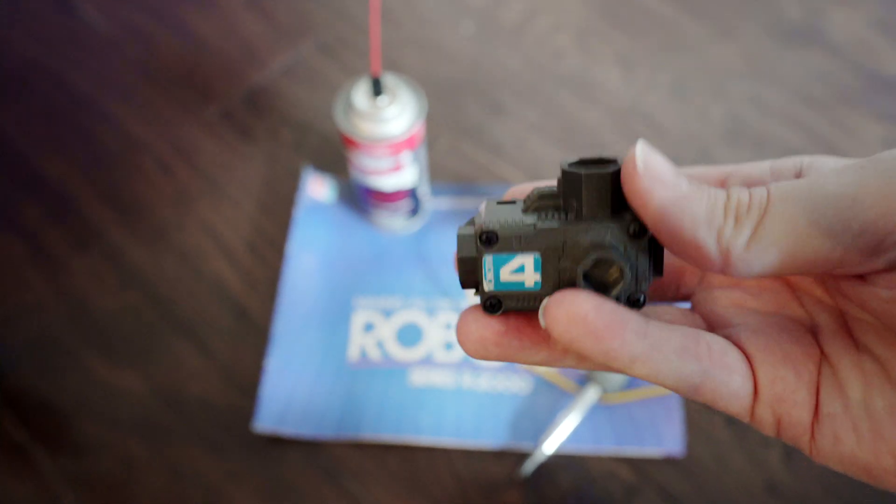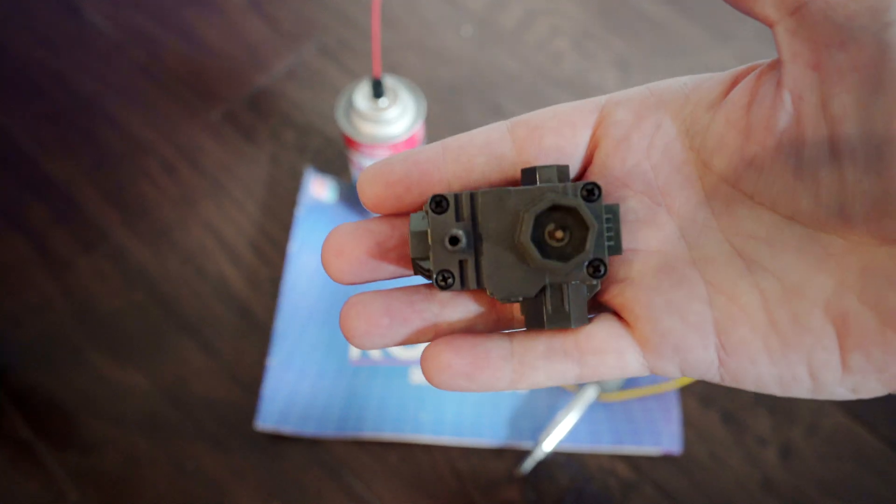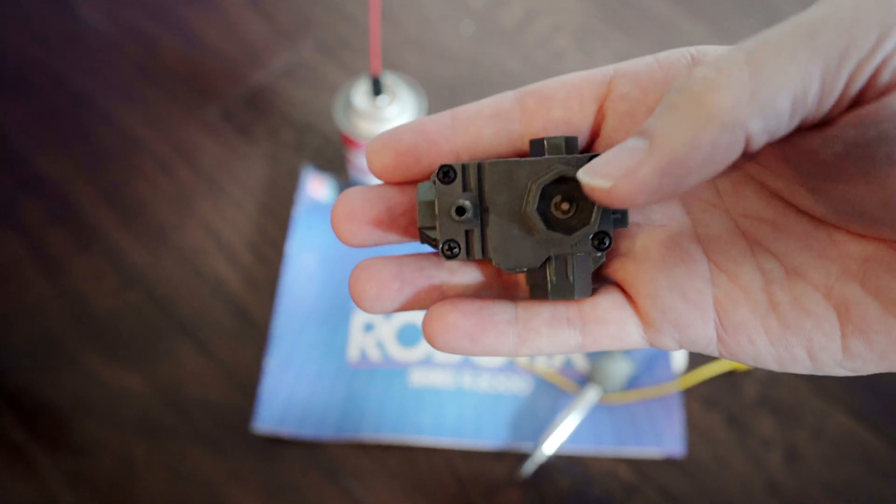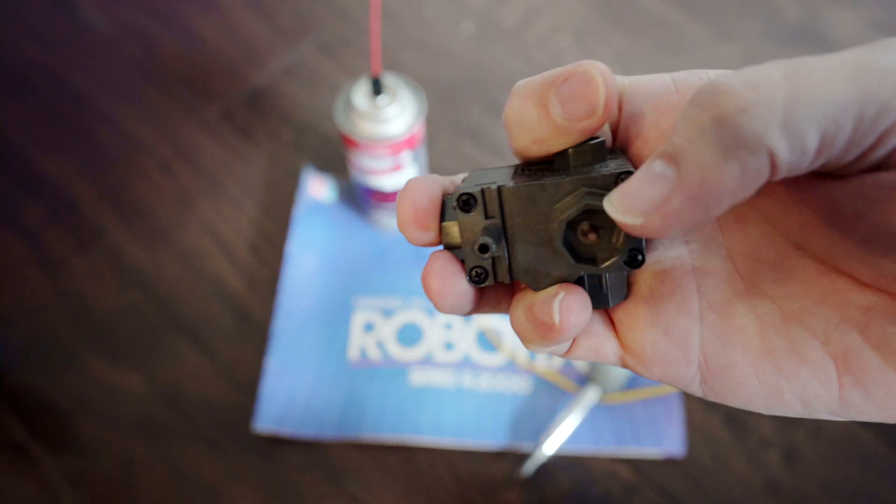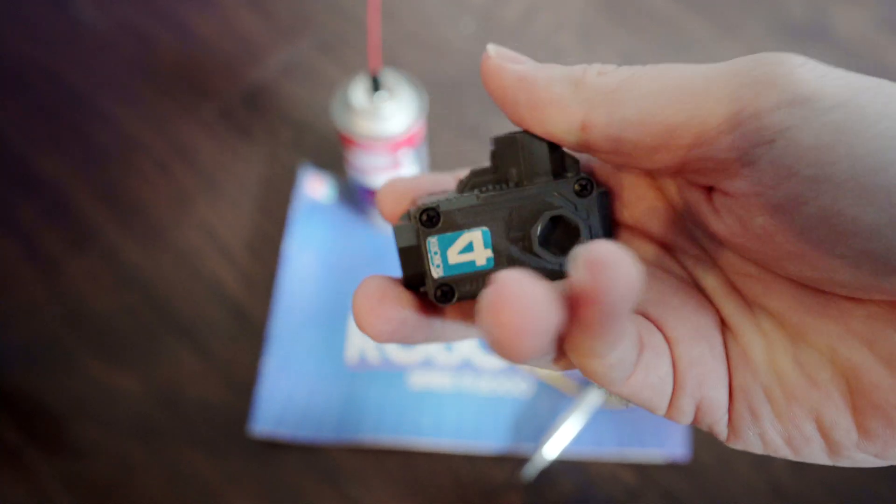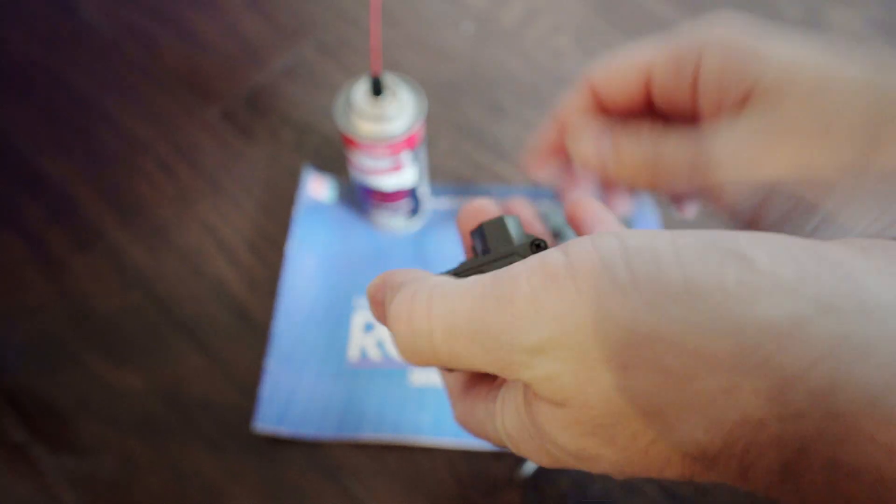So the first thing you want to do is there are two sides of the motor that have screws on them. You want the side that doesn't have the actual driving attachment on it. You want the other side. And so get you a screwdriver and open it up.